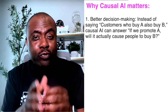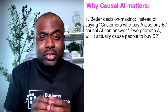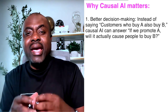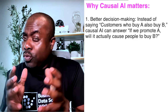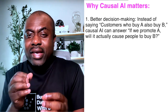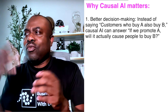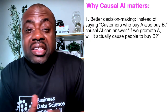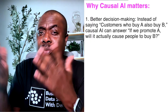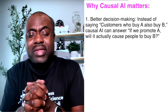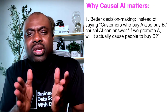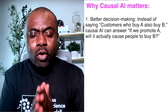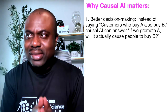Instead of saying 'customers who buy A also buy B,' causal inference answers the question: if we promote A, will people actually buy B? For example, you may know that by promoting T-shirts, jeans will also be promoted. But if you don't know that causal relationship, you'll base your decisions solely on correlation. So number one reason causal AI is important is better decision making.